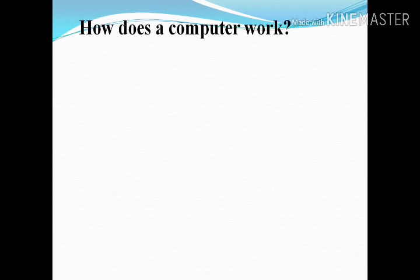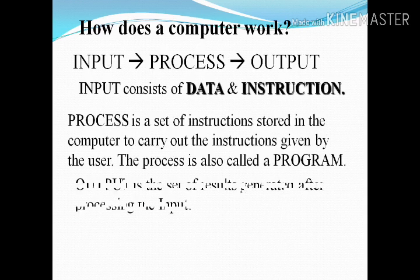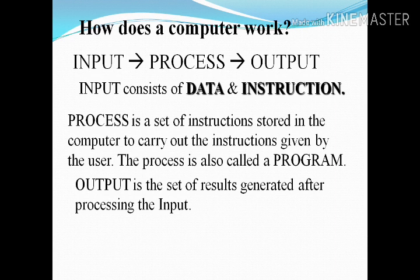How does the computer work? It takes the input, processes it, and gives us the output. Input consists of data and instructions; process executes the instructions as a program; and output is the set of results generated after processing the input. Input gives us data and instructions, and the process stores this data and instructions in the computer to carry out the instructions given by the users.